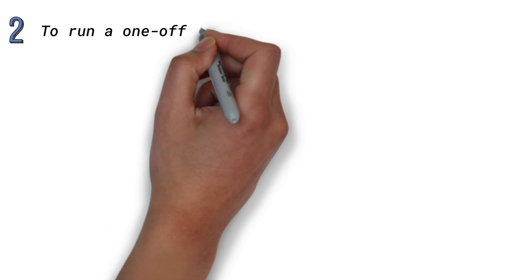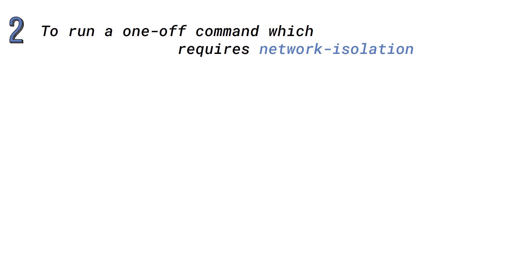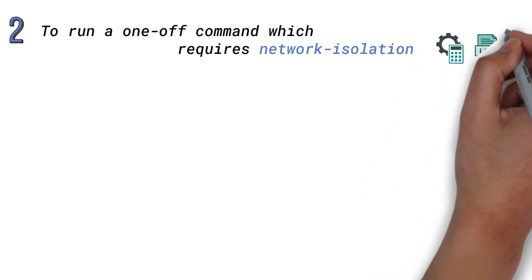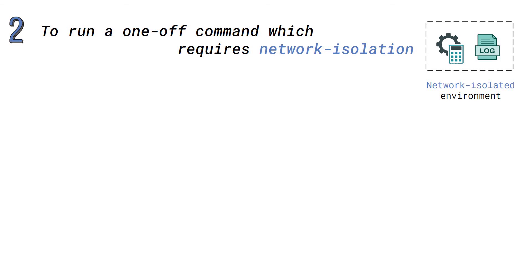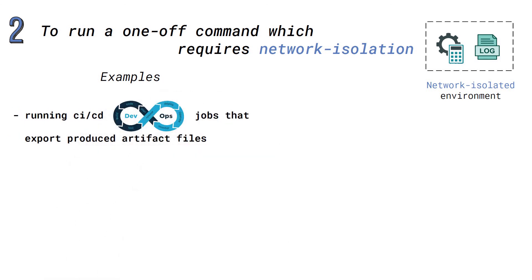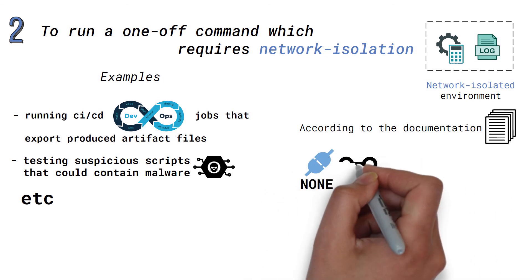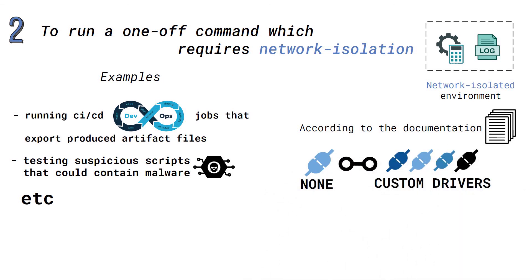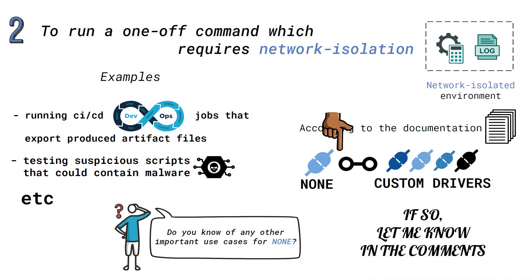Another use case could be to run a one-off command which requires network isolation — sometimes it might just be required to perform a computation and print something in the console in a secure network isolated environment. Examples could include CI/CD jobs that export produced artifact files, or testing suspicious scripts or programs that could contain malware. According to the documentation, none may also be used in conjunction with custom network drivers. Do you know of any other important use cases I am missing? Please feel free to let me know in the comments below.